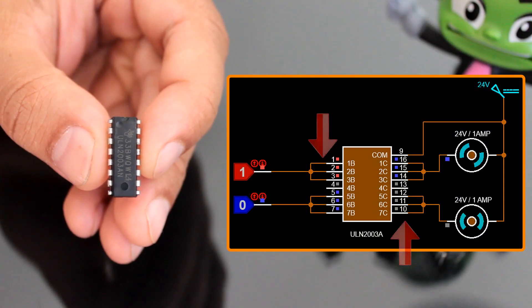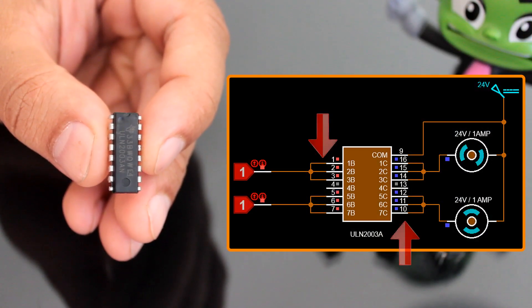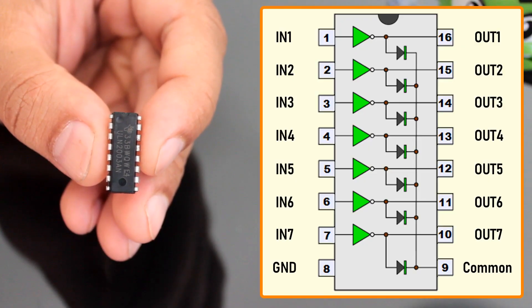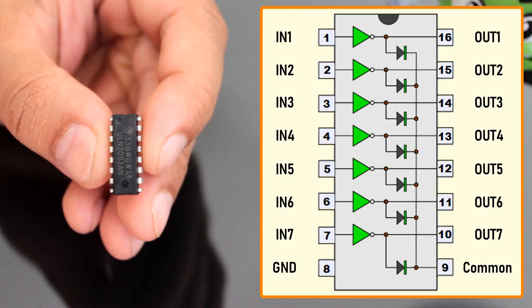The Darlington pairs can be paralleled for higher current output. The inputs are compatible with TTL and 5V CMOS logics. Now let's deep dive and check out the internals of the IC and how it can be used in our projects.